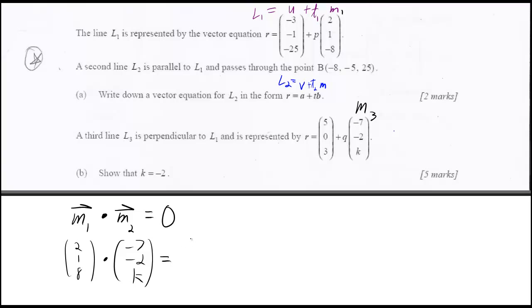And you just do 2 times negative 7, plus 1 times negative 2, plus 8 times k. And we want it to come out to 0, right?